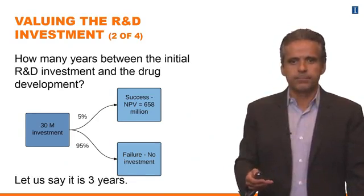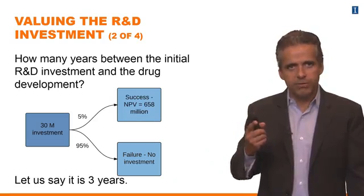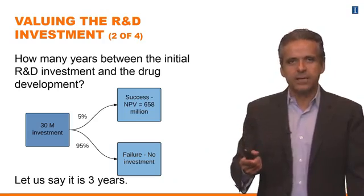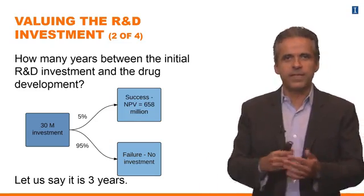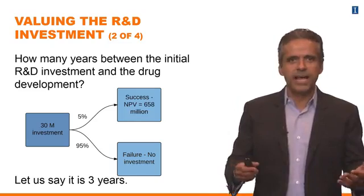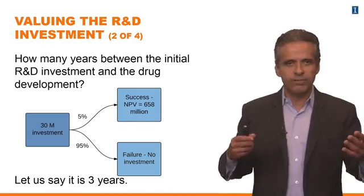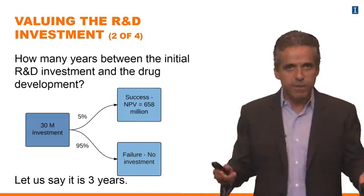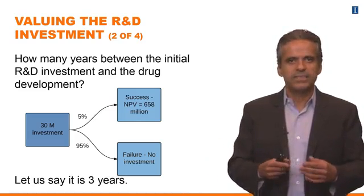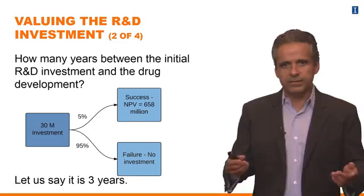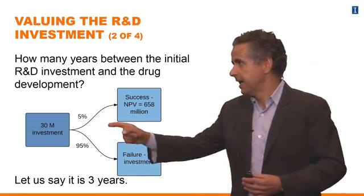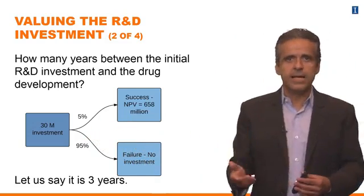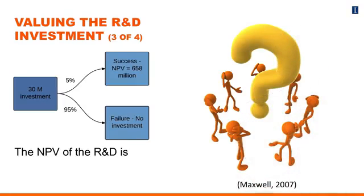We still have to think about one more issue before the final valuation: how long does the research take? Research takes time. Developing a drug typically takes a few years to determine success or failure. For our example, let's say it's three years — the period between the 30-million-dollar investment and the development decision is three years. Now, with all this data, try to calculate the NPV of the R&D investment yourself before we go through the solution.